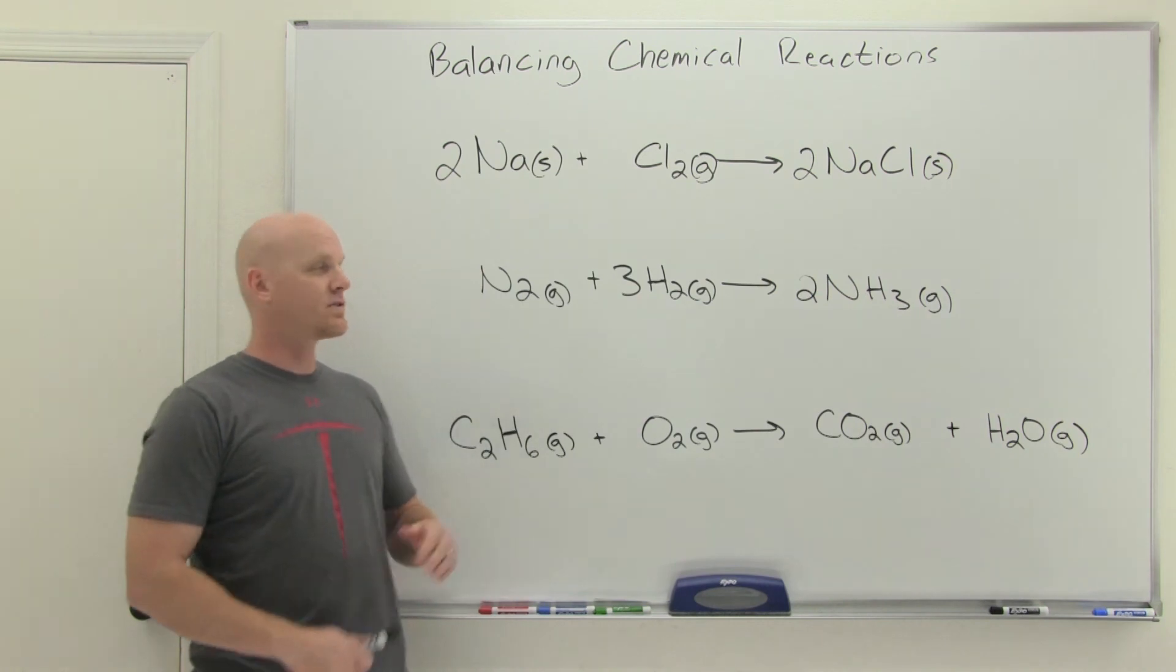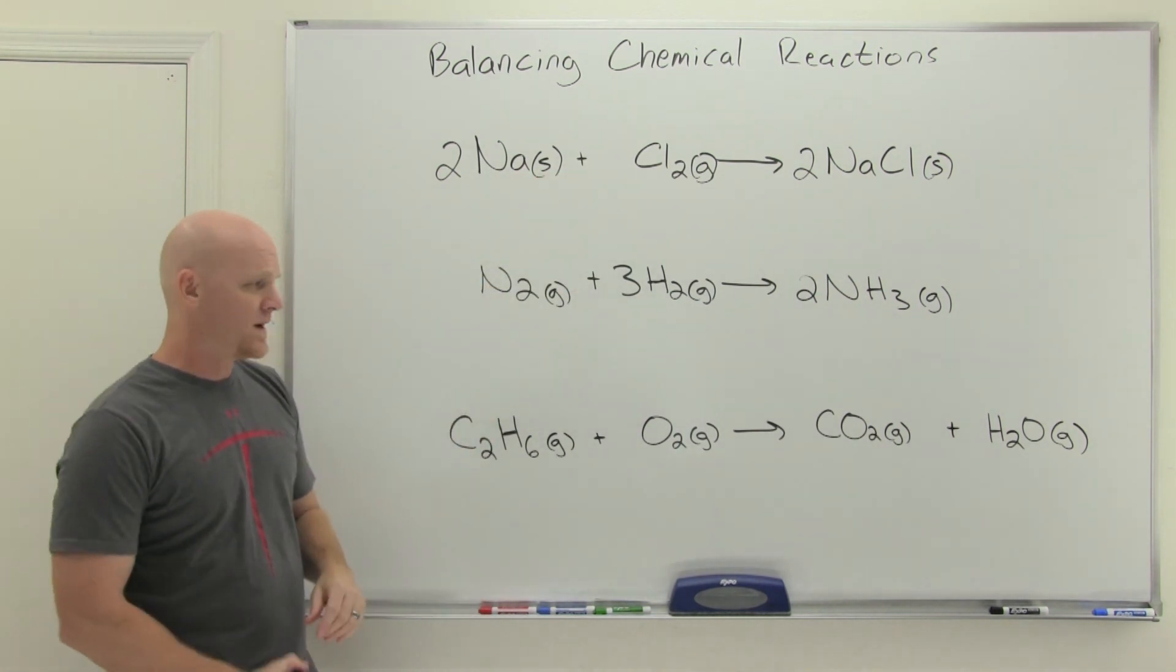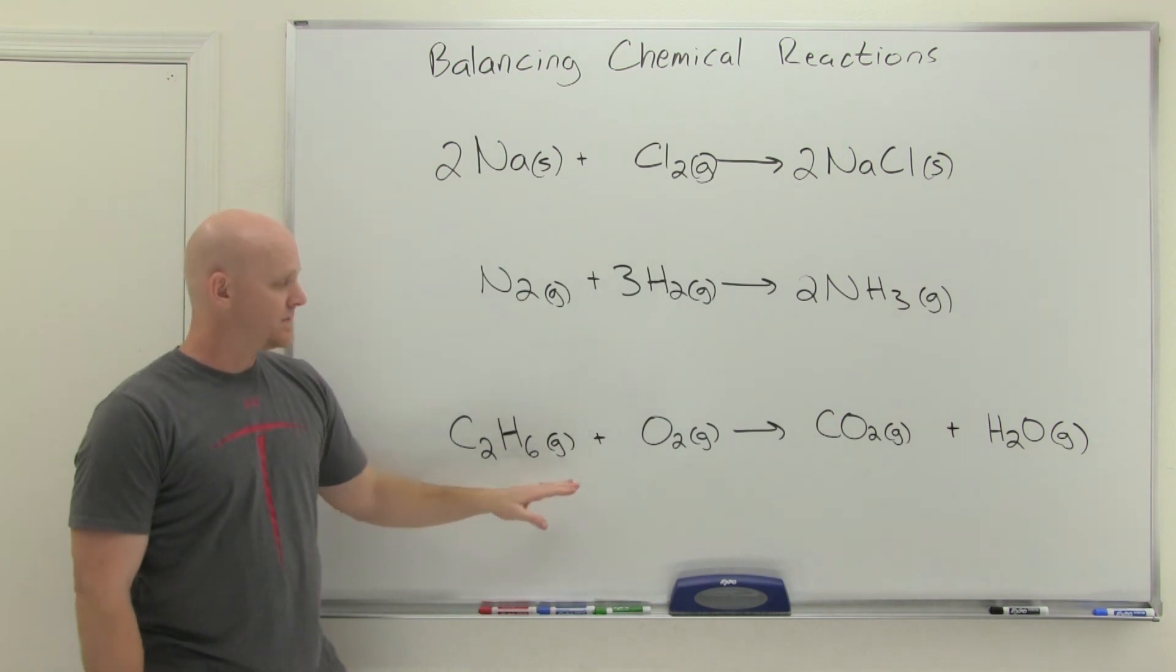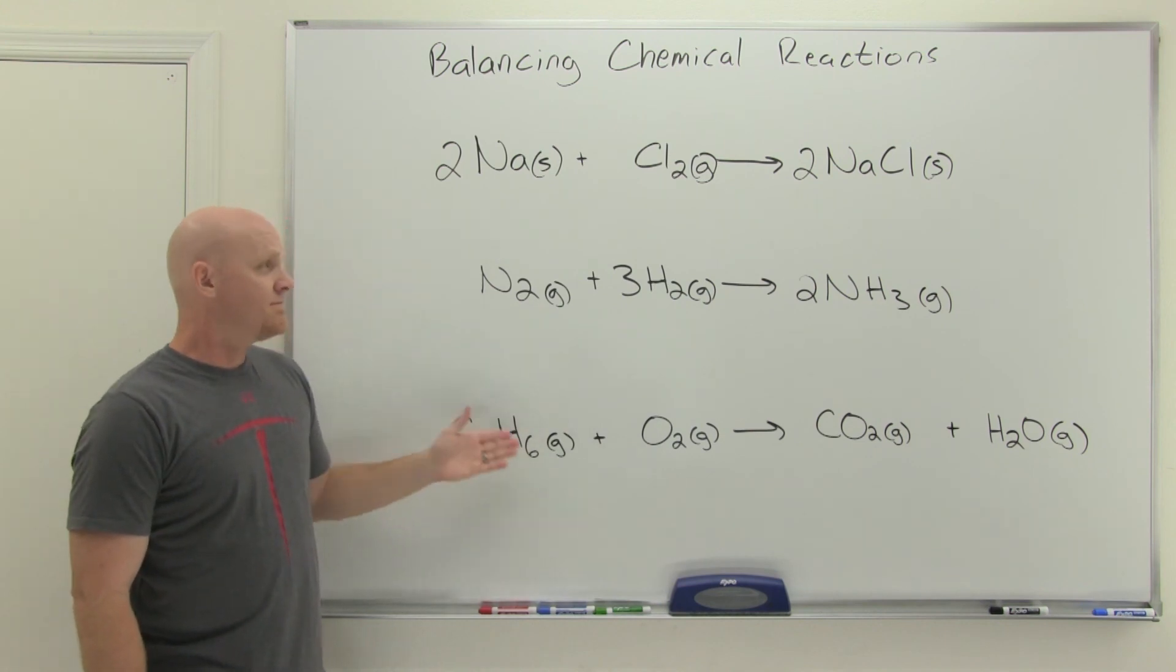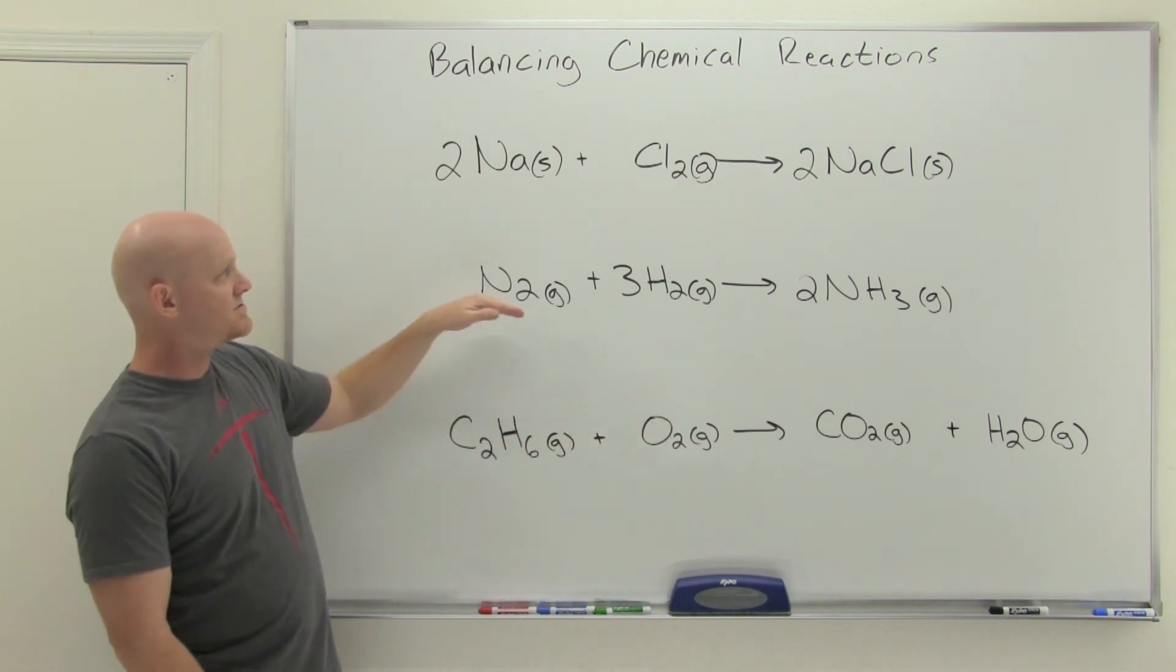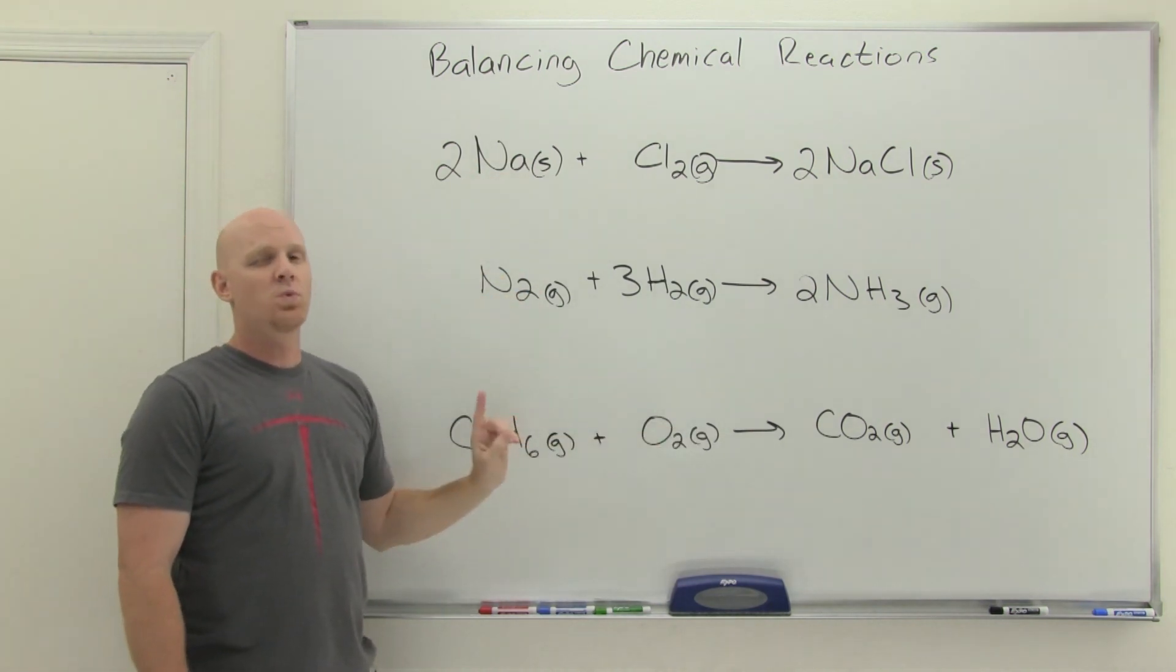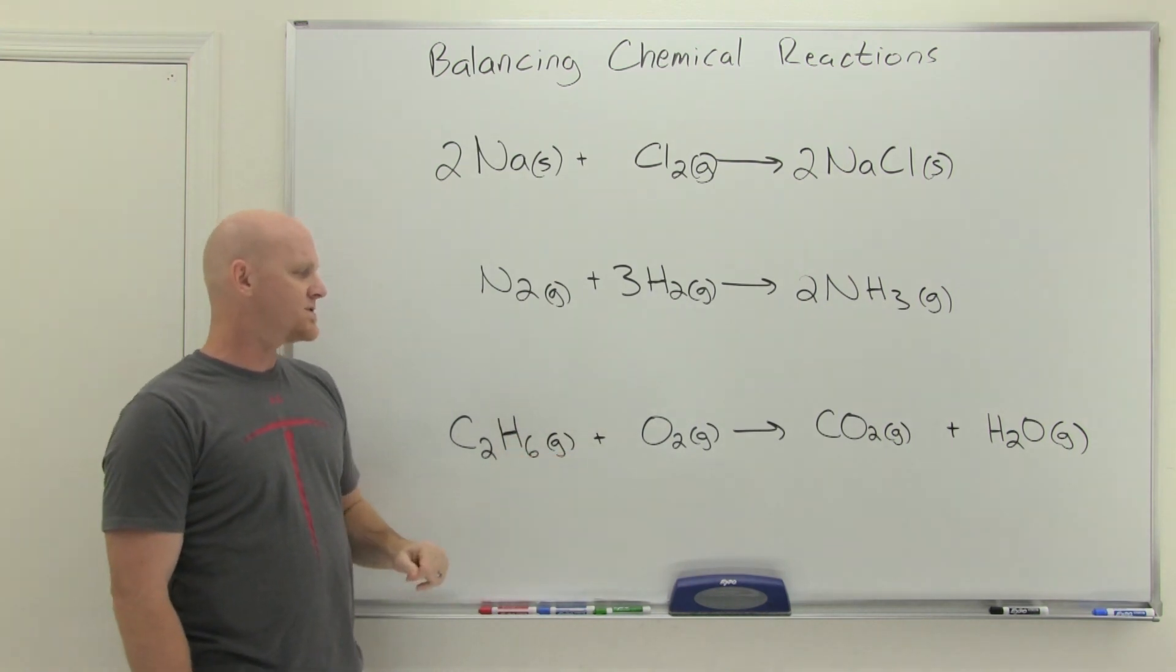All right, so I started this off with a couple of easier examples to kind of get our feet wet here. But we're going to ramp it up a little ways here into this one, which is definitely going to be a little more challenging. Now in this one, we've got four different chemical species instead of just three like the last two. But there's one other unique thing about this that's going to make this a little more challenging, and that is that one of the elements shows up in two different places on the same side of the reaction arrow.